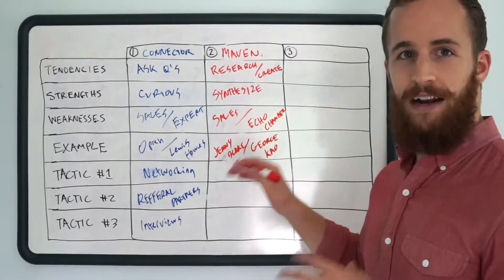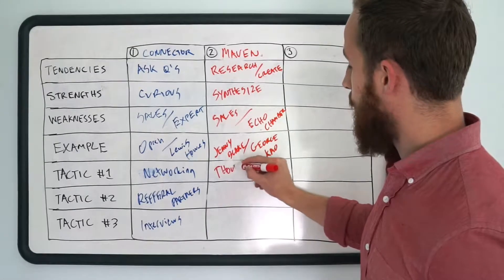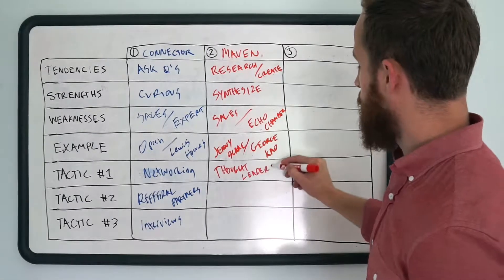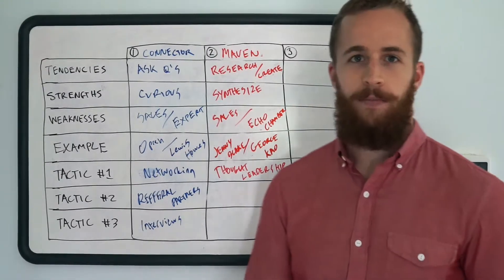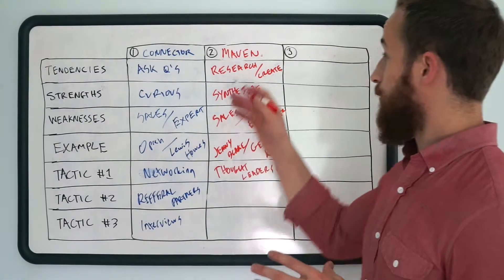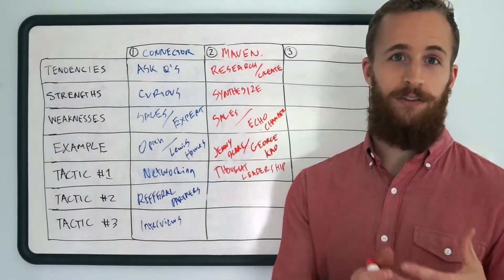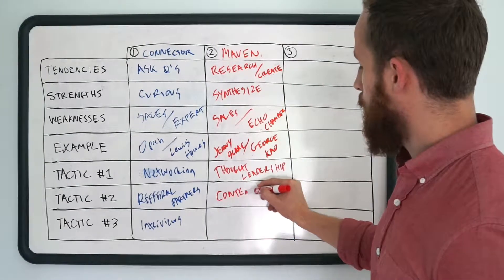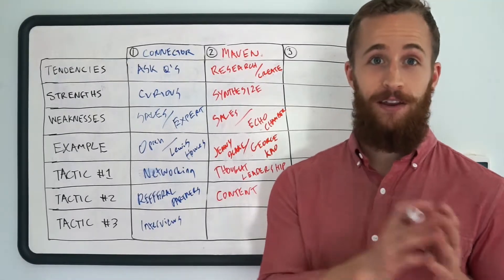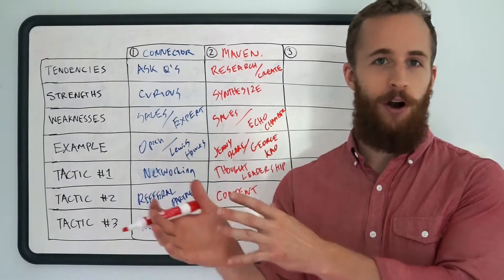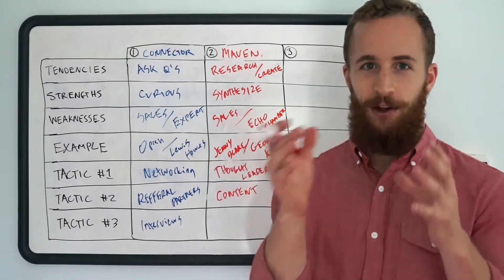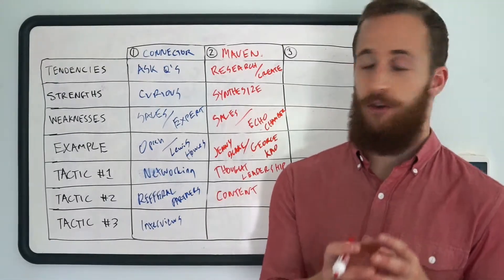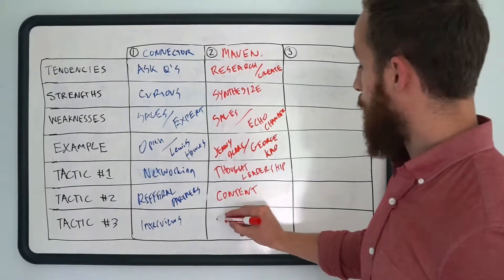Which brings us to tactic number one for a maven which is thought leadership. Thought leadership. So tactic number one is thought leadership which just means don't just gather information but actually create your own innovative systems and approaches. Tactic number two is content related to thought leadership but put it out there. Write your best-selling book. Write the blog article that's very, very detailed step-by-step. Make that video that shows how much you know about this topic so that people can really view you as an authority.